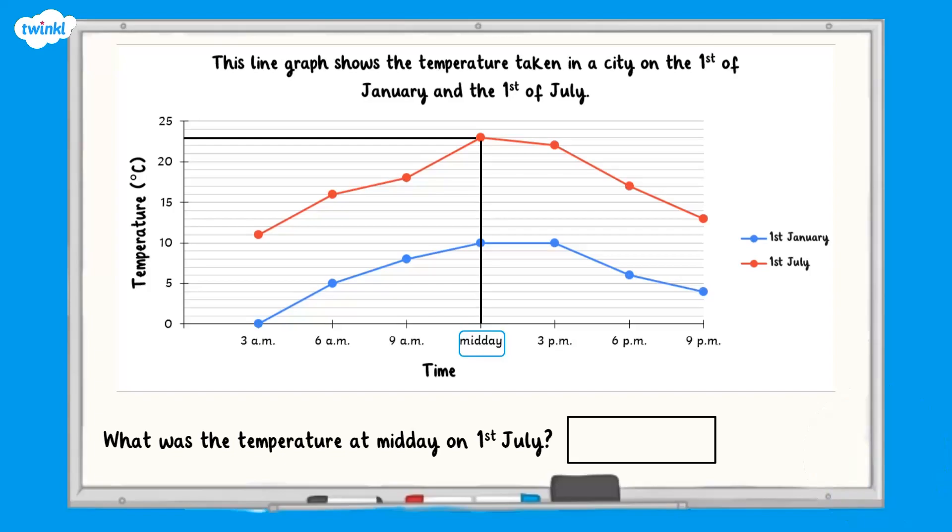Let's check your answer. The point where the line reaches the y-axis isn't labelled, but we can work out that each of the intervals has a value of 1 degree. So the answer is 23 degrees.